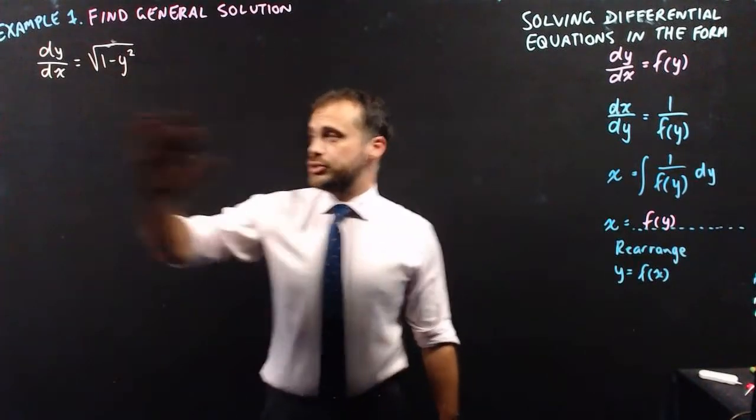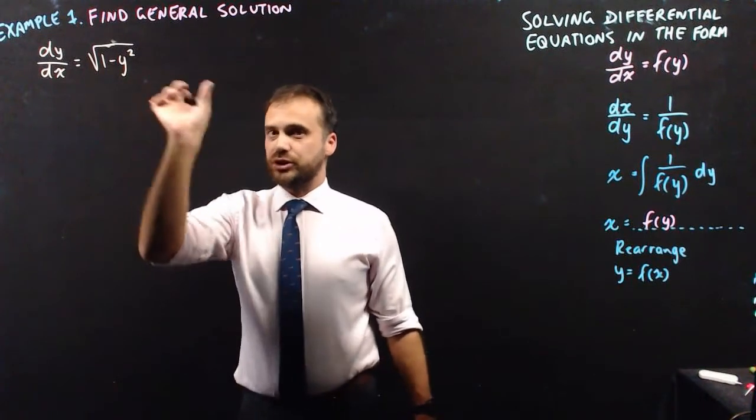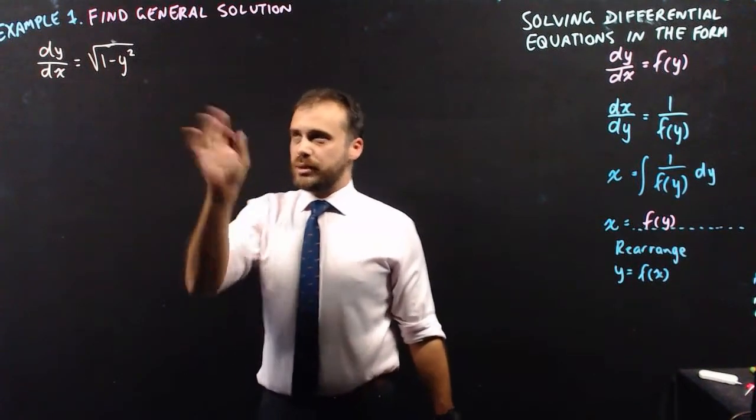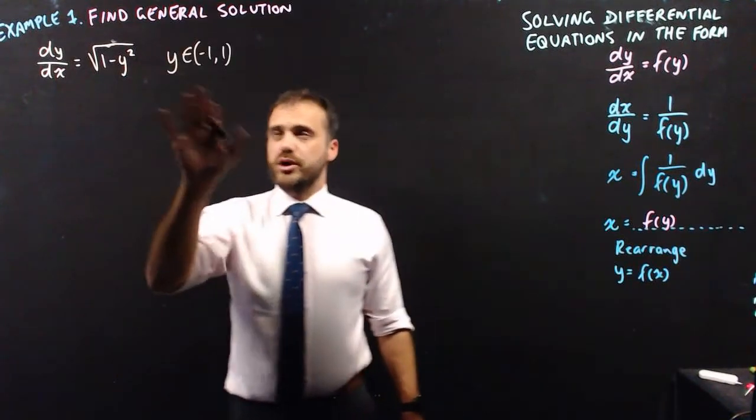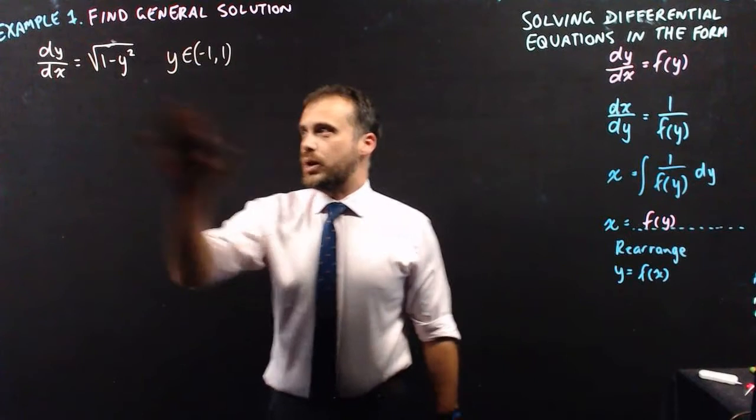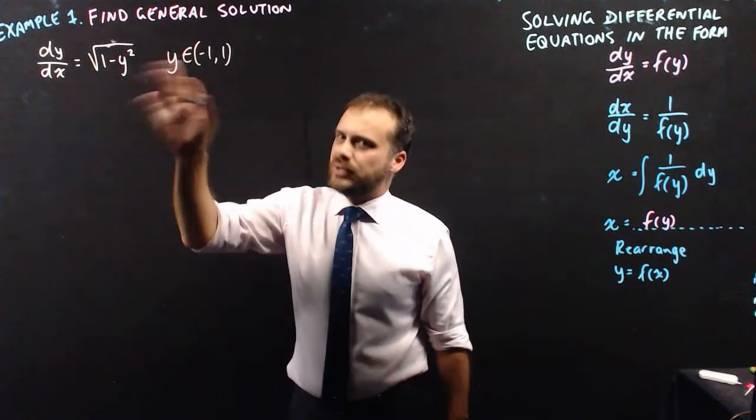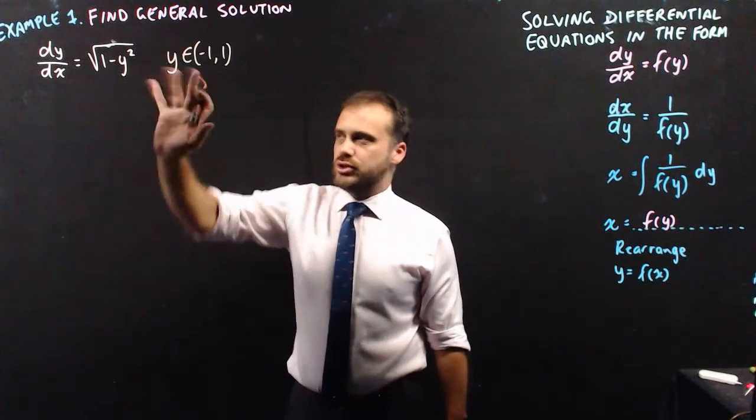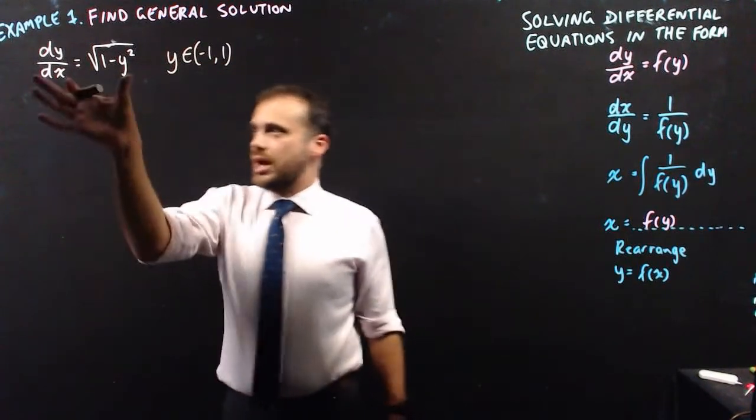So first example, we're going to find the general solution of this differential equation, and you'll notice that it's a function of y. Now I really want to be pedantic here. This differential equation only works where y is between negative 1 and 1, and you can figure out why that is because of that square root side. But for the most part, we can kind of ignore this restriction and just get started here.